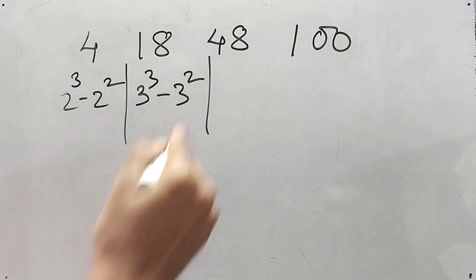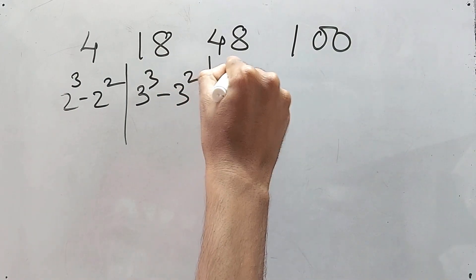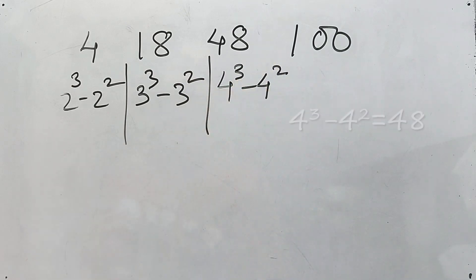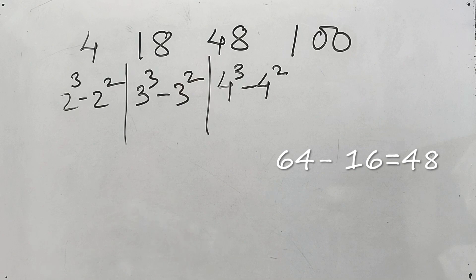3 cube is 27 and 3 square is 9, so 27 minus 9 is 18, right?